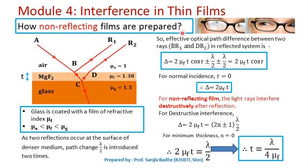How are non-reflecting films prepared? A non-reflecting film means nothing is reflected back. In order to get a non-reflecting film on a glass surface, the glass surface is coated with a thin film of transparent material. The material is chosen such that its refractive index is greater than the refractive index of air and less than the refractive index of glass.